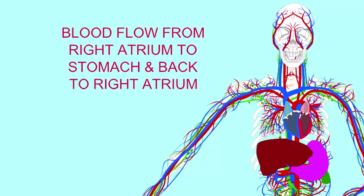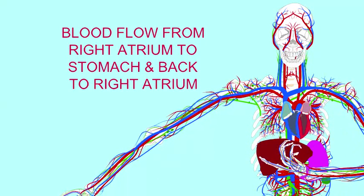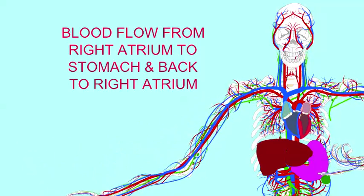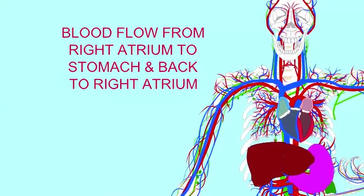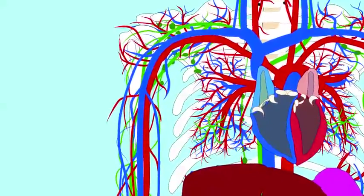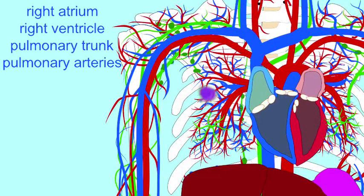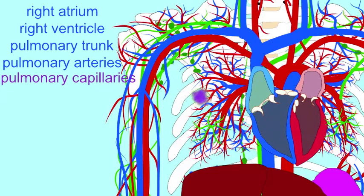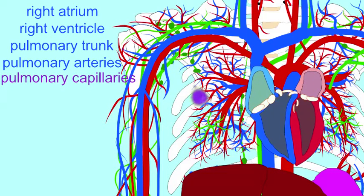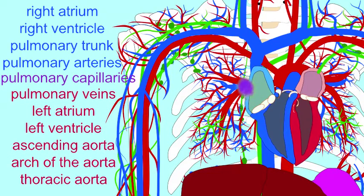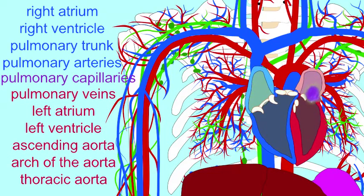If I wanted to take the blood that's in my right atrium and send it to my stomach and back, I would first need to go to the right ventricle, the pulmonary trunk, the pulmonary arteries to the lung capillaries where gas exchange can occur so this blood can become oxygenated, then pass this red oxygenated blood through pulmonary veins to the left atrium.